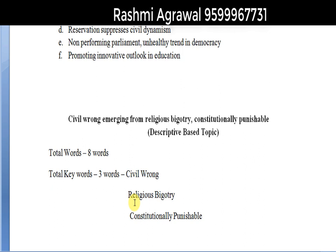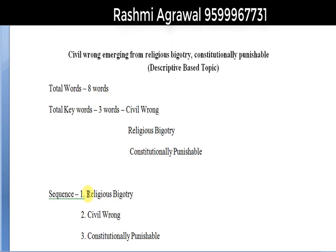What does sequence mean? You will be able to know which key component will be located in which paragraph. Will you talk about civil wrong in the first para, or religious bigotry, or constitutionally punishable in the second or third para? The CAPF essay has a total of 300 words, and you have to divide these 300 words into a maximum of six paragraphs. So you have to decide the para-wise location of these three components. Religious bigotry leads to civil wrong, and when a person commits civil wrong, they are subjected to punishment under the constitution.